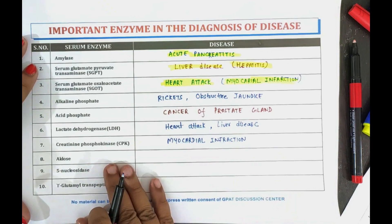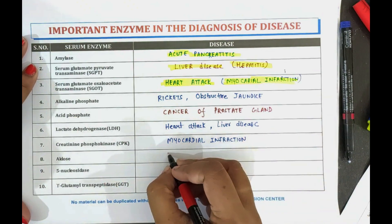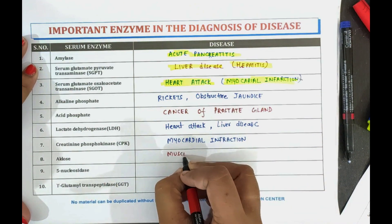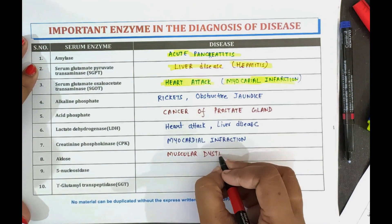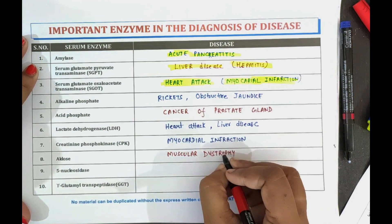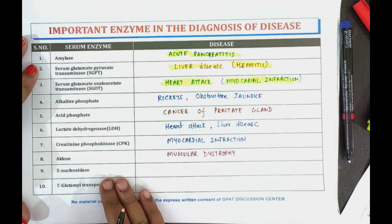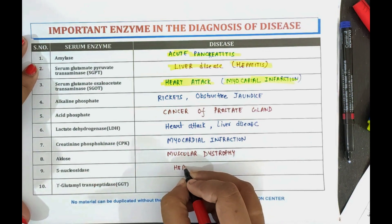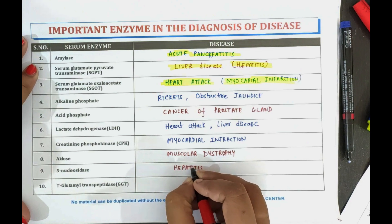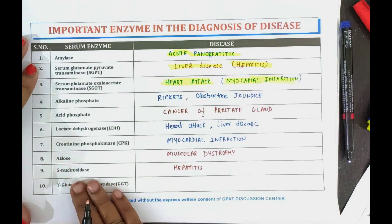LDH enzyme is also used to detect muscular dystrophy. Now coming towards the next one — the 5-nucleotidase enzyme is used to detect hepatitis. We can diagnose any type of hepatitis with the help of 5-nucleotidase.